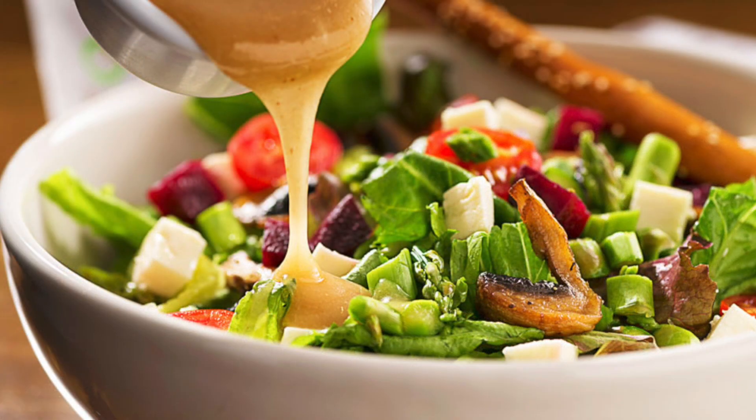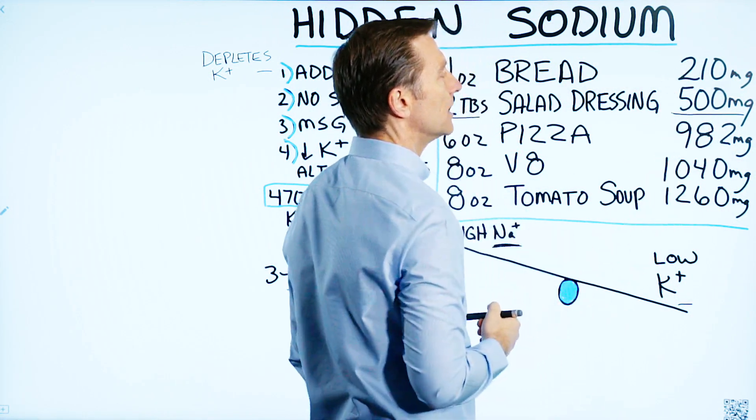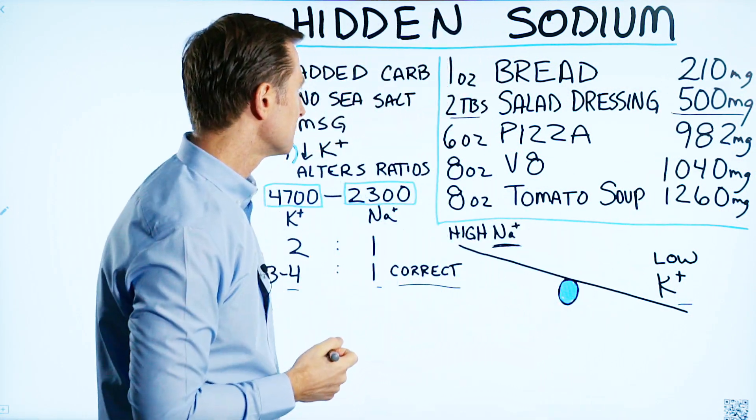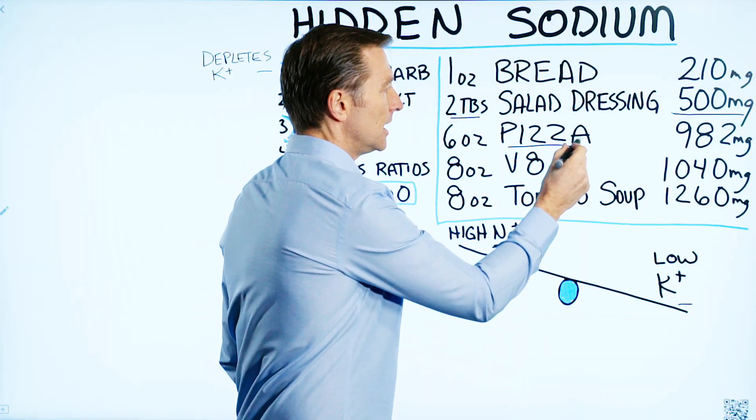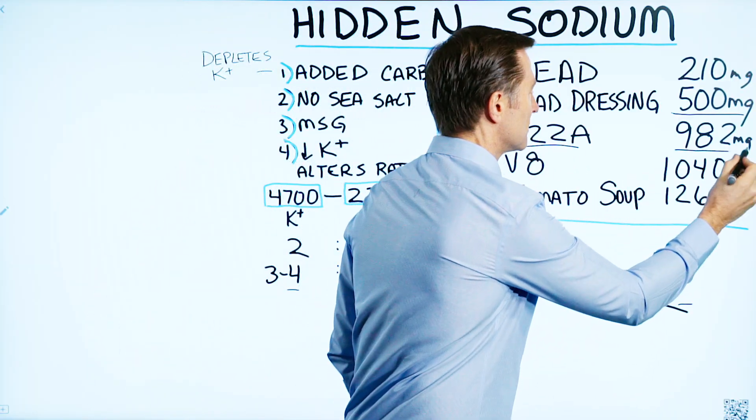Two tablespoons of salad dressing at the grocery store can give you over 500 milligrams of sodium. Six ounces of pizza, that's actually one slice, is almost 1,000 milligrams of sodium right there.